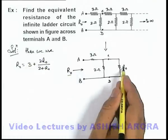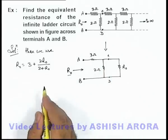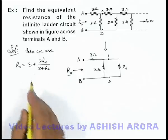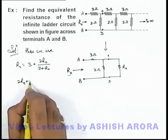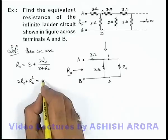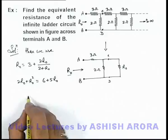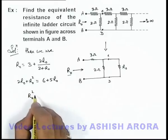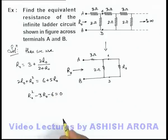Because 2 and R_not are in parallel combination, and this is in series combination with this 3-ohm. So if we simplify it, we get 2R_not plus R_not squared equals 6 plus 5R_not. On further simplifying, we are getting R_not squared minus 3R_not minus 6 equals zero.